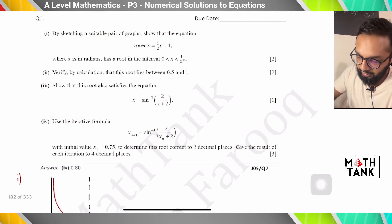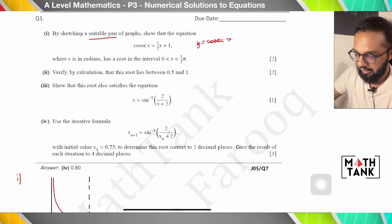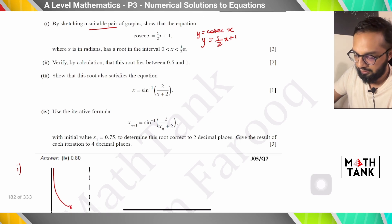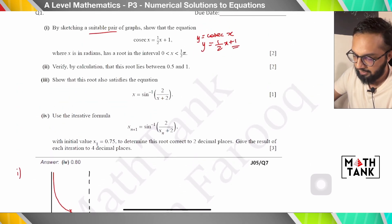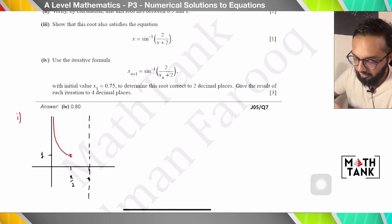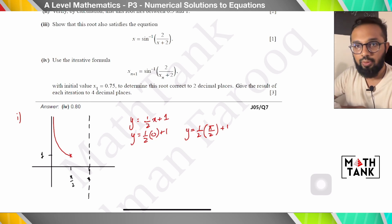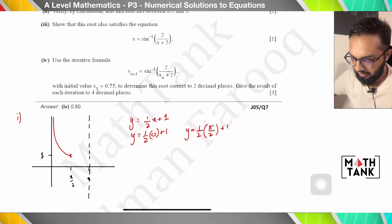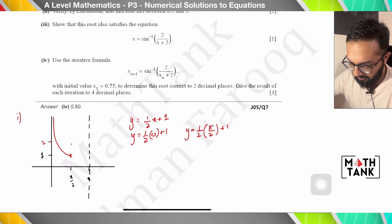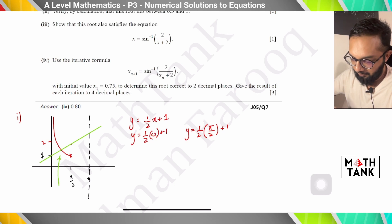I need to draw cosec x and the other graph, which is ½x + 1, and show that the intersection point gives one root in the interval. To draw ½x + 1, I find the y-intercept at 1, and for the endpoint I use π/2: (π/2)/2 + 1 = π/4 + 1, which gives approximately 1.79 — about 2. Drawing this line confirms there is one root in the interval.